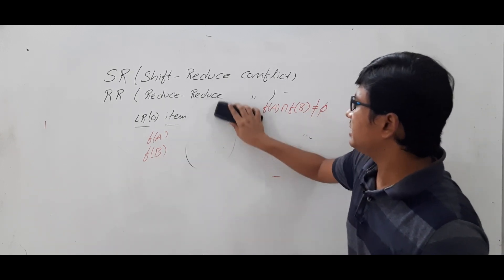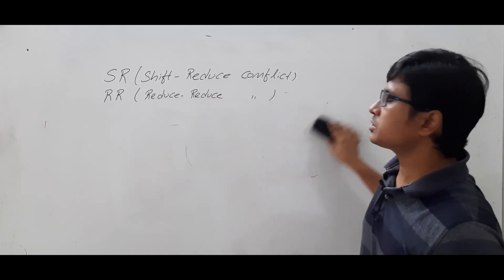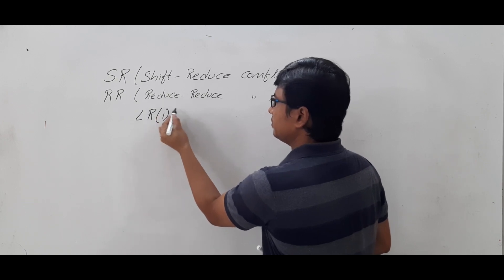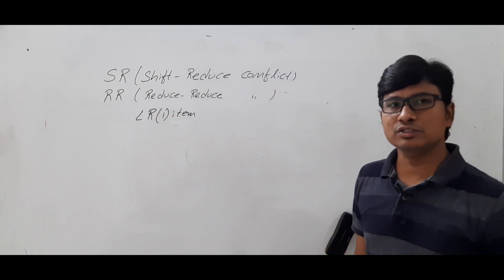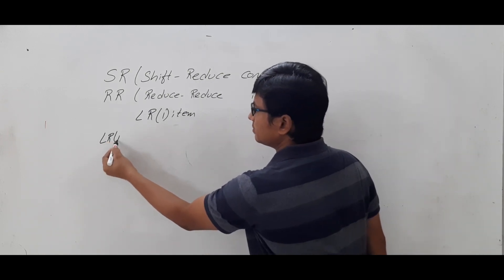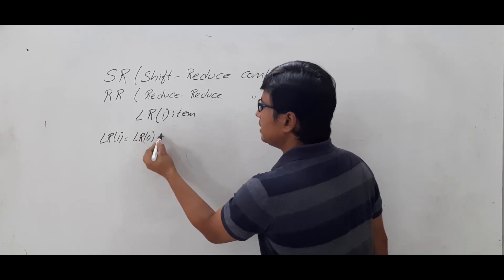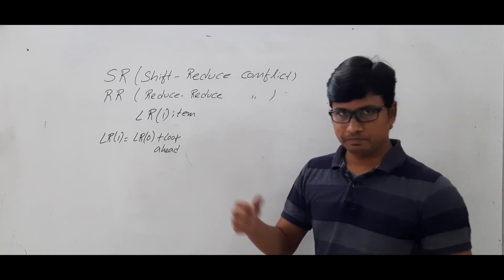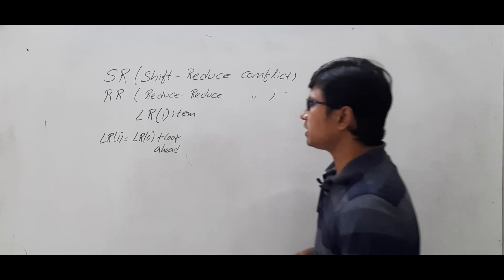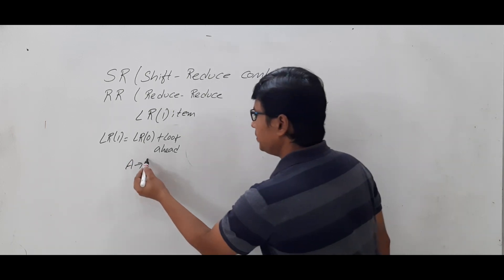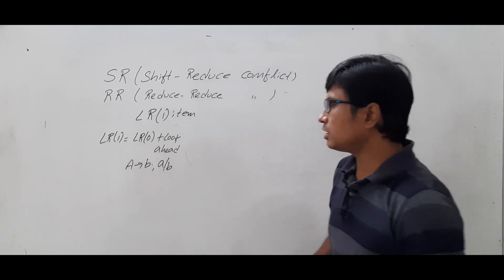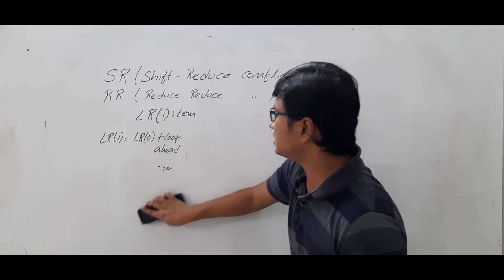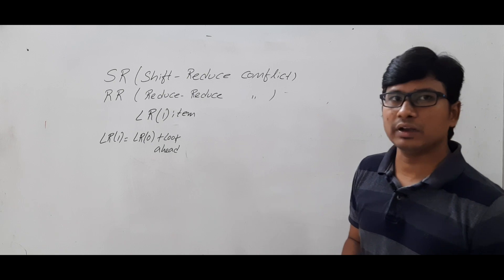Now we will discuss SR and RR conflicts with respect to LR1 items. By this time you should understand the difference: LR1 item = LR0 item + lookahead. The use of the lookahead is to tell us where to write the reduce move. For example, if I have A → b · with lookahead {a, b}, then the reduce move is written only in terminal columns 'a' and 'b' in the action part.